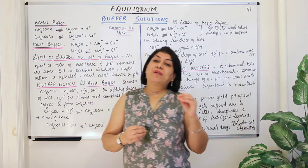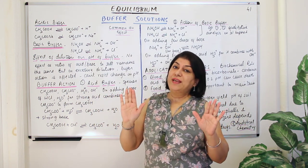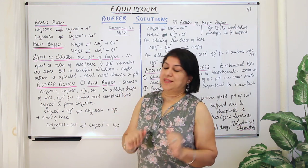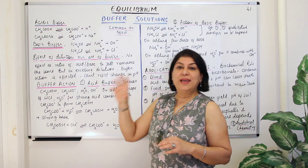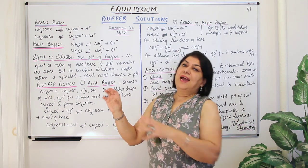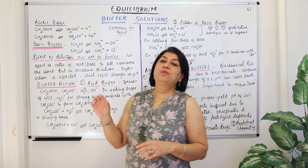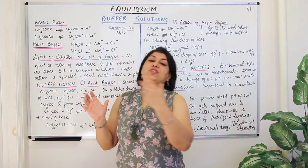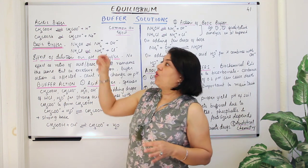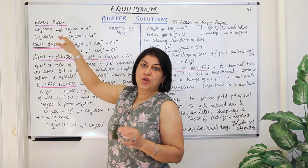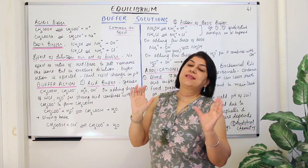Buffer solutions are of two main types: the acidic buffer and the basic buffer. The acidic buffer is formed when you have a weak acid and its salt with a strong base. A basic buffer is formed by a weak base and its salt with a strong acid. Such mixtures of the acid and its salt, or the base and its salt, act as a buffer.